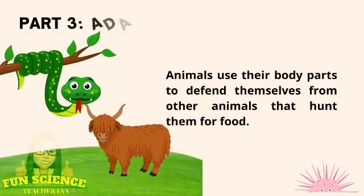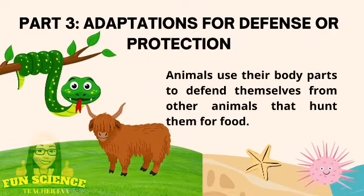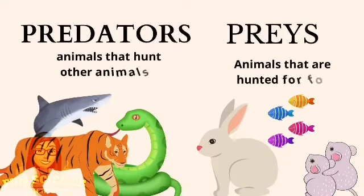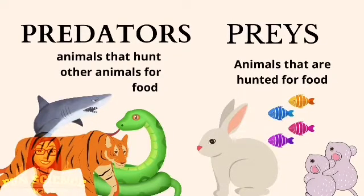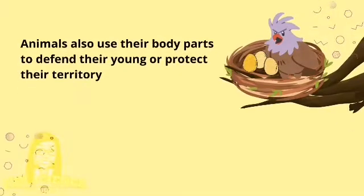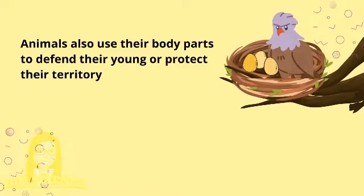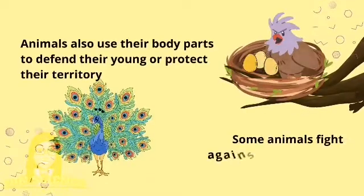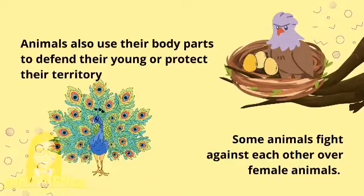Animals use their body parts to defend themselves from other animals that hunt them for food. These animals that hunt other animals for food are called predators. Animals also use their body parts to defend their young or protect their territory. Some animals fight against each other over female animals.